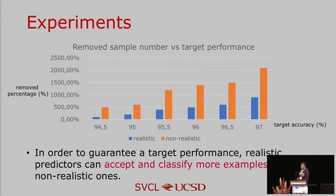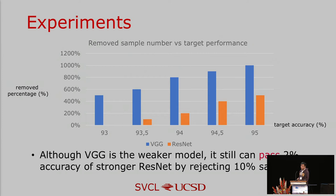Finally, we present the main result evaluating our realistic predictor. We use a standard CNN as the non-realistic classifier with the same network complexity, using confidence score as the hardness criterion. We record the percentage of examples removed on the test set when guaranteeing different target accuracy levels. Our realistic predictor can accept more examples for the same target accuracy. Also, comparing VGG and ResNet realistic predictors, we see that even the weaker VGG model can match the accuracy of standard ResNet by rejecting about 5% of samples, and exceed ResNet accuracy by 2% by rejecting 10% of samples.